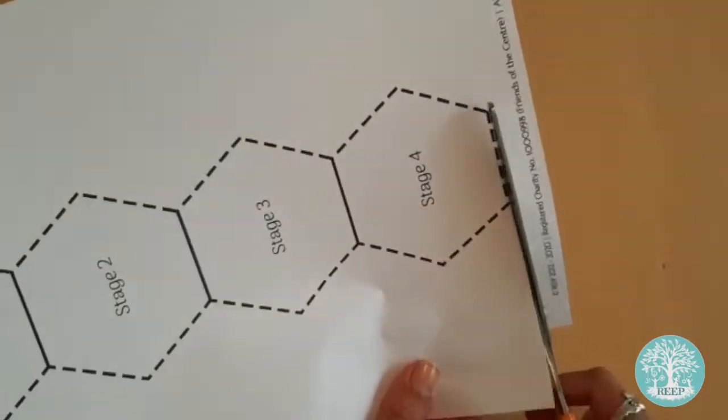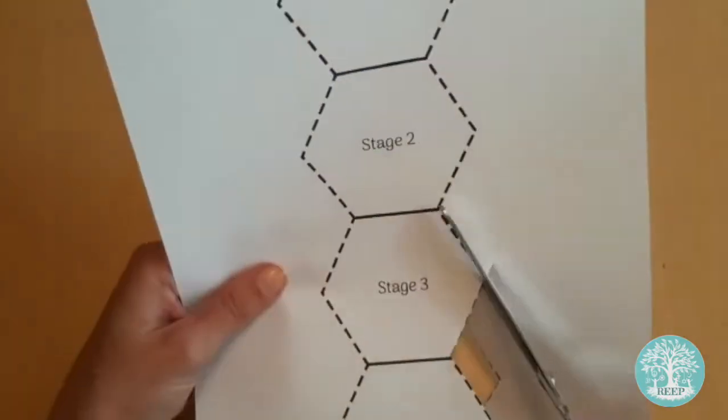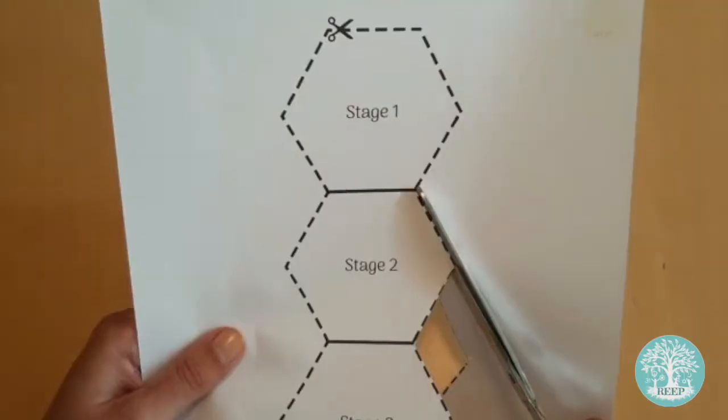Cut along the dash lines of page 3 to create the template for your hexagonal booklet, but make sure you don't cut the fold lines.